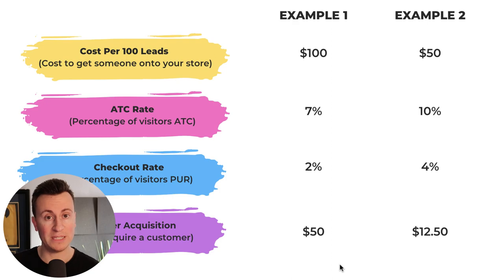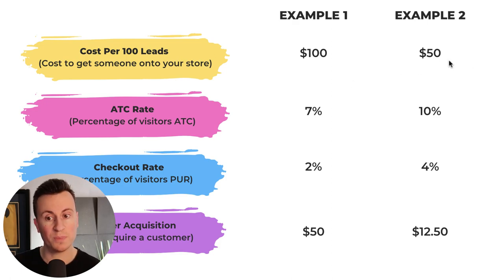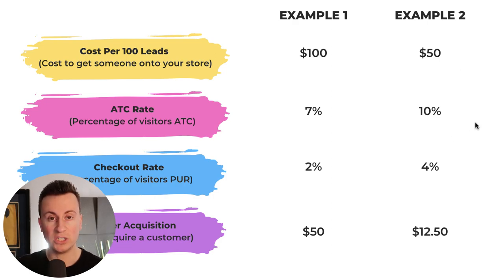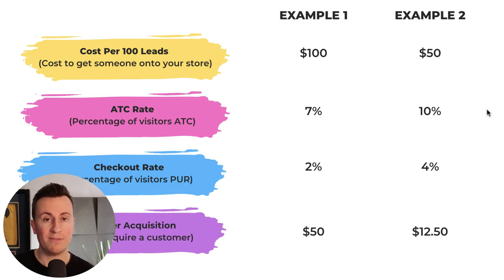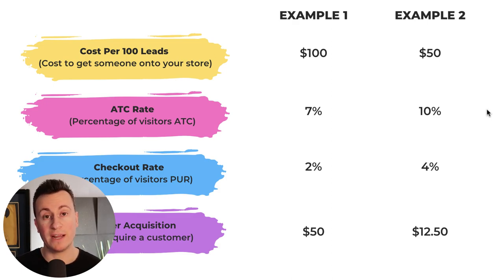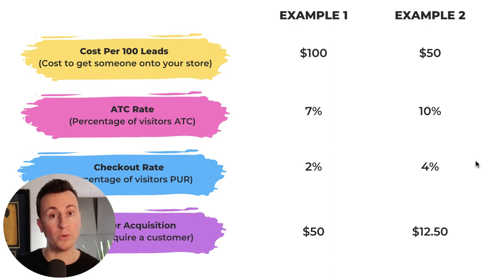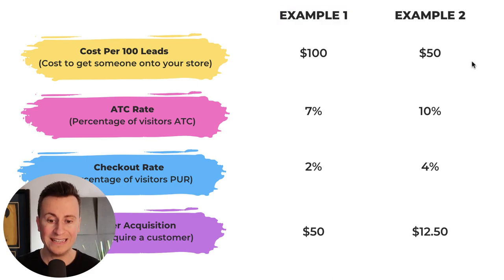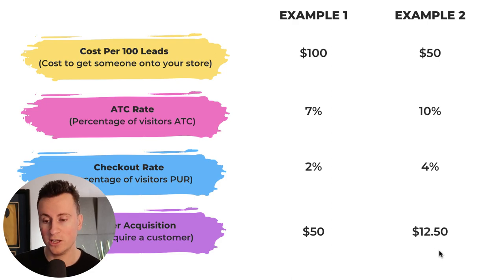In example 2, we've got better performing ads and a better performing landing page. We're getting $50 per every 100 people, so our cost per link click is $0.50. We have a better converting product page, making our add-to-cart rate 10% — 1 in 10 people hitting that button, which is really good. We have a conversion rate of 4%, so for every 100 people, 4 are actually buying our product. Dividing $50 by 4 gives us a cost per acquisition of $12.50, which is really, really good.